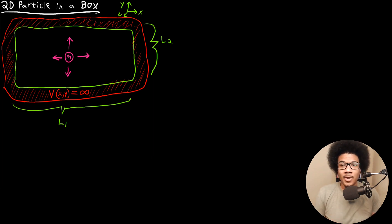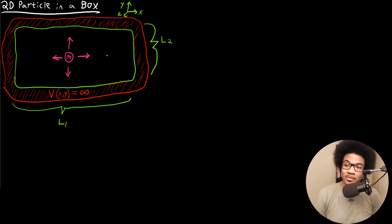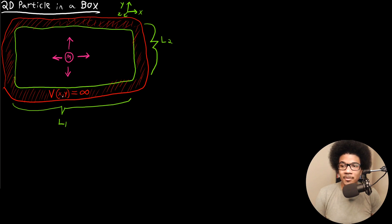Well, it's going to change our Schrodinger's equation just a little bit. Anytime you add a different dimension, that has to be taken into account. This is a schematic of the new problem we're looking at — the two-dimensional particle in the box. We've got our particle of mass M that's free to move in two directions, the X and the Y direction. It's inside a box surrounded by a two-dimensional infinite potential, and this potential is a function of X and Y. The horizontal space I'm going to call L1, and the vertical space I'm going to call L2.